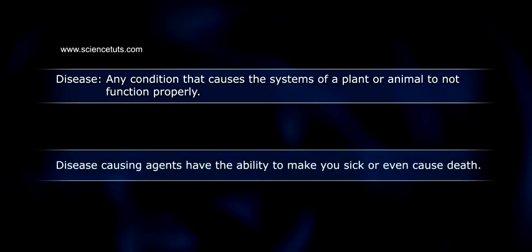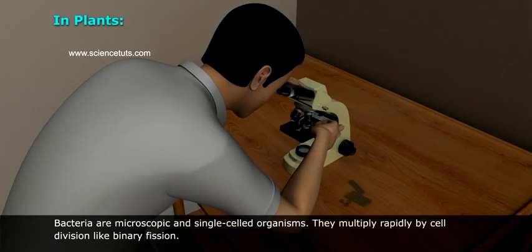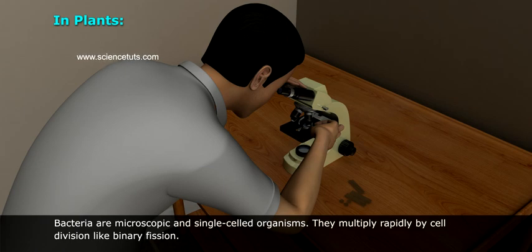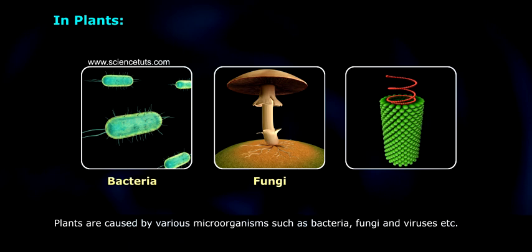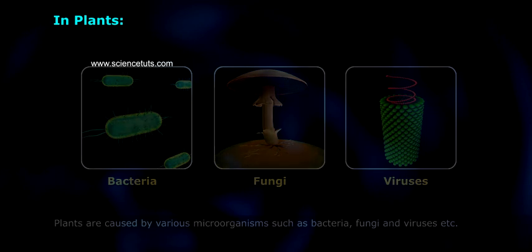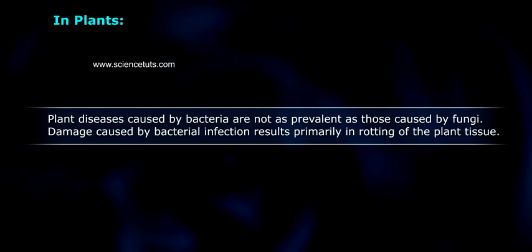Disease-causing agents have the ability to make you sick or even cause death. In plants, bacteria are microscopic and single-celled organisms. They multiply rapidly by cell division like binary fission. Plants are affected by various microorganisms such as bacteria, fungi, and viruses. Plant diseases caused by bacteria are not as prevalent as those caused by fungi.